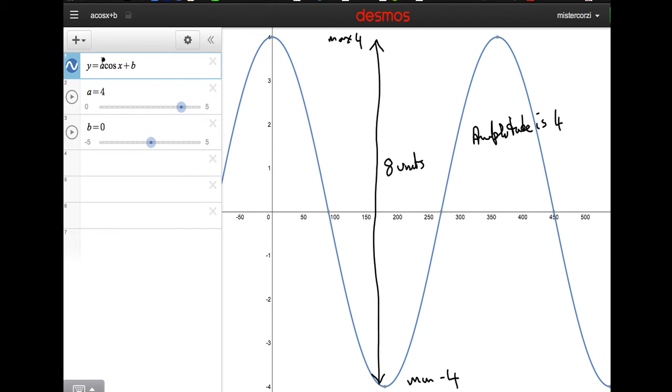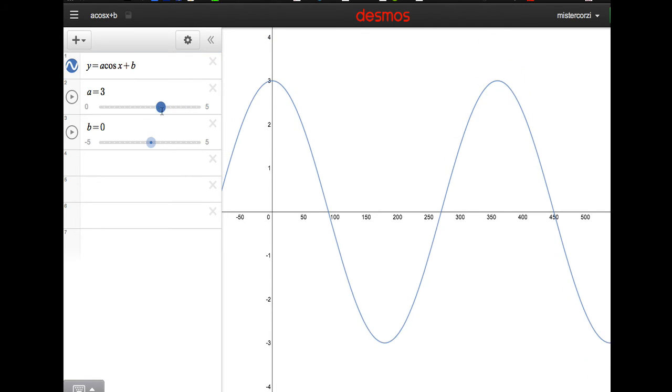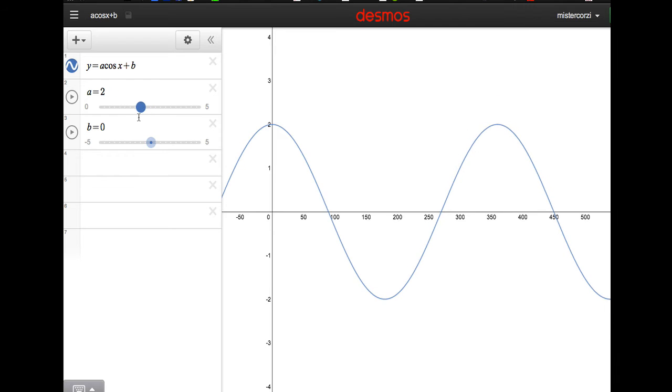So the amplitude is 4. So basically this number a that we have here, in this case a is 4, this number tells us the amplitude of the graph. Let's just move it back down. There's an amplitude of 2. The original graph amplitude of 1. There's an amplitude of 1 half. That's y equals a half cos x. So the number at the front tells us the amplitude.